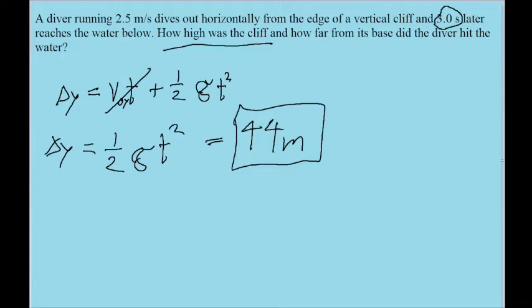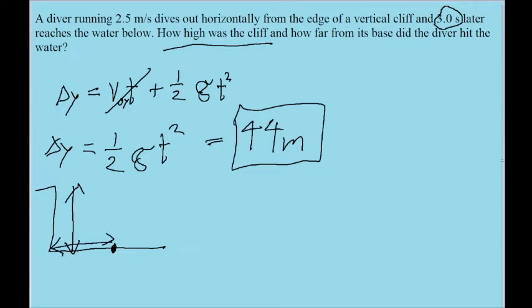The second part of the problem asks how far from the base of the cliff the diver hit the water. This is about horizontal motion and horizontal range. I should have drawn a diagram from the beginning — when the problem asks how high the cliff is, it's asking about the vertical distance. But now that it's asking how far from the base the diver hit the ground, it's looking for the horizontal range. So if the diver took a curved path, we want to know how far horizontally the diver traveled in the time it took them to fall before hitting the water.